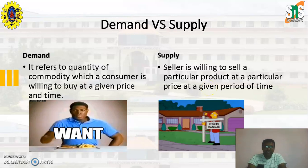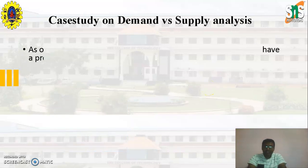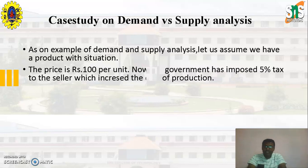For better understanding, we are going to discuss one example. The price of the particular product is Rs. 100 per unit. Now the government has imposed a 5% tax to the seller, which increases the cost of production. From the demand vs. supply analysis, we are going to discuss 4 major items which differentiate demand vs. supply.